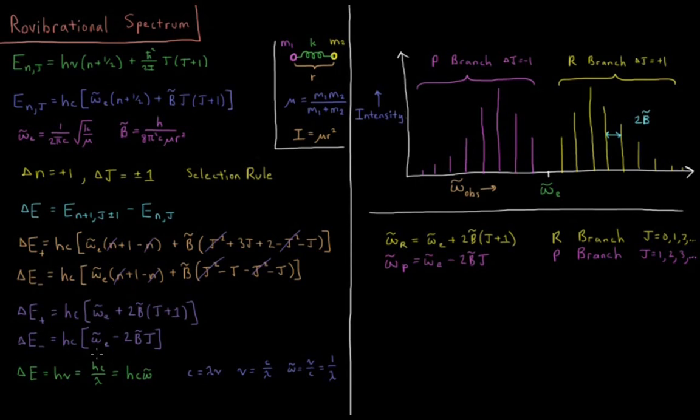So the energy of our transition is equal to Planck's constant times the frequency of the photon we're going to absorb. Speed of light equals wavelength times the frequency of that photon. Frequency equals speed of light over wavelength. So inverse wavelength 1 over lambda is equal to the frequency divided by speed of light. So we're taking our energy and we're dividing it by hc to get the value in wave numbers. So delta E equals hc omega observed or omega bar observed.